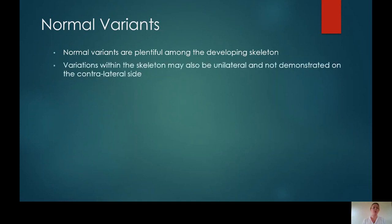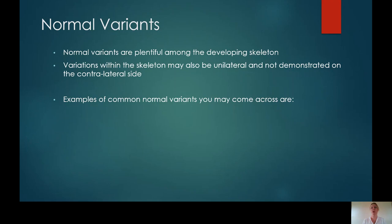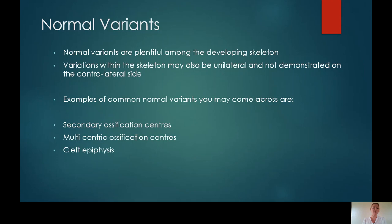There are numerous normal variants amongst the developing skeleton. Variations in the skeleton may also just happen on one side of the same person, and they will massively vary from patient to patient as well as age ranges. Common normal variants that you may come across are secondary ossification centres, multi-centric ossification centres, or cleft epiphyses. But again, this list is not exhaustive.